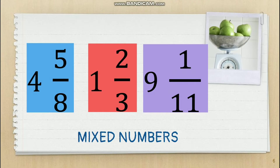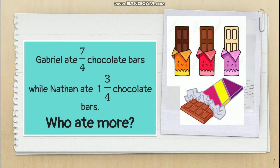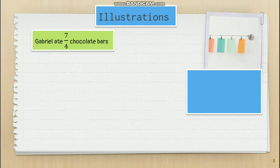Now let's have this word problem. Gabriel ate 7/4 chocolate bars while Nathan ate 1 and 3/4 chocolate bars. The question is, who ate more? To help us identify who ate more between Gabriel and Nathan, let us illustrate the following fractions. Gabriel ate 7/4 chocolate bars, and 7/4 is an example of an improper fraction.